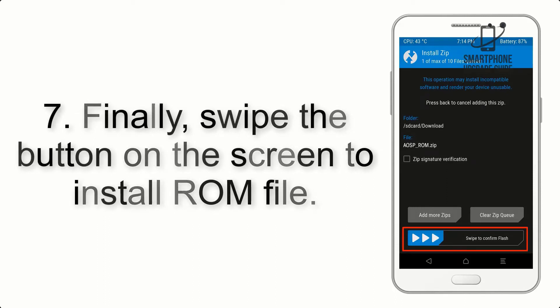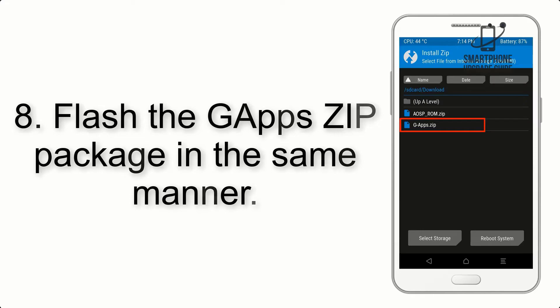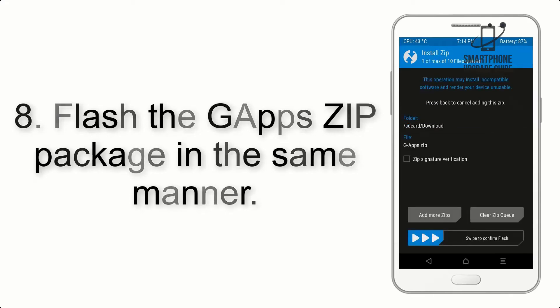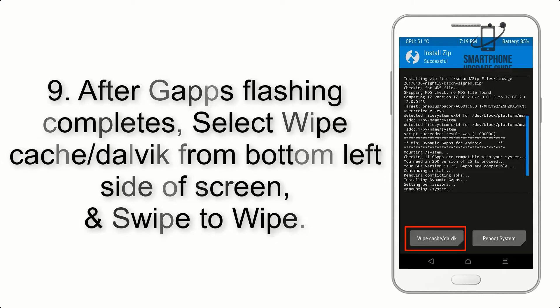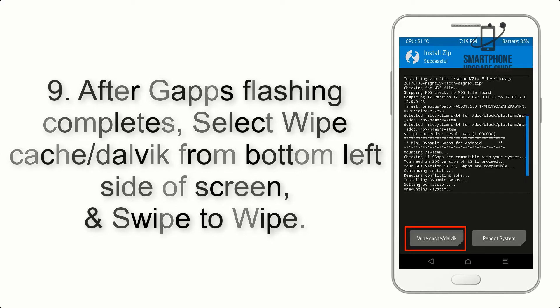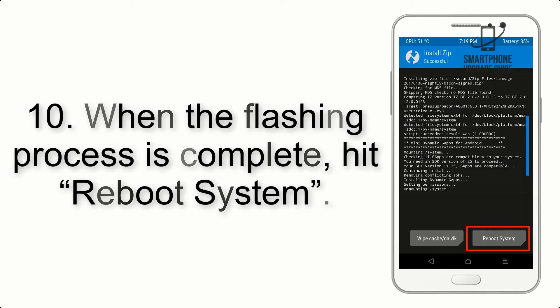Step 7: Swipe the button on the screen to install the ROM file. Step 8: Flash the GApps zip package in the same manner. Step 9: After GApps flashing completes, select Wipe Cache and Dalvik from the bottom left side of the screen and swipe to wipe.